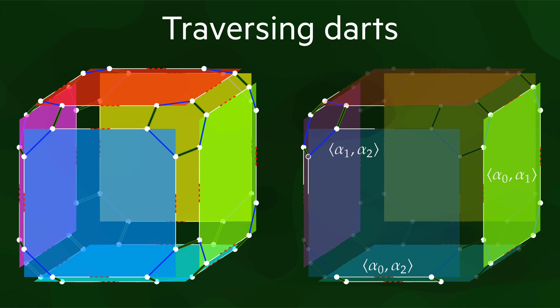As we have seen before, switching the i-dimensional vertex from a dart means switching the i-dimensional cell that it belongs to. Because of this, if we want to obtain all of the darts on a vertex, edge, face or volume, we simply need to obtain the orbit that allows all involutions and permutations except for the one of that dimension.